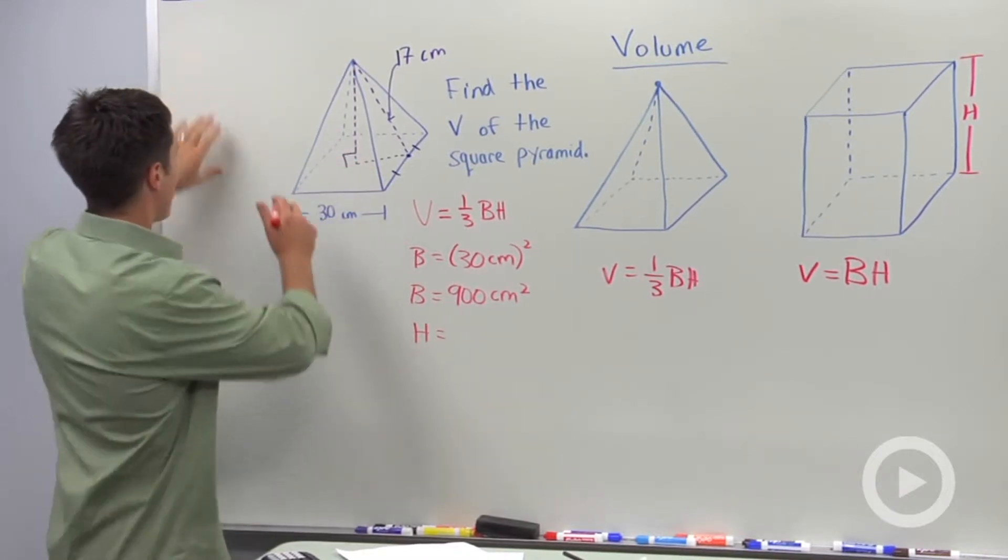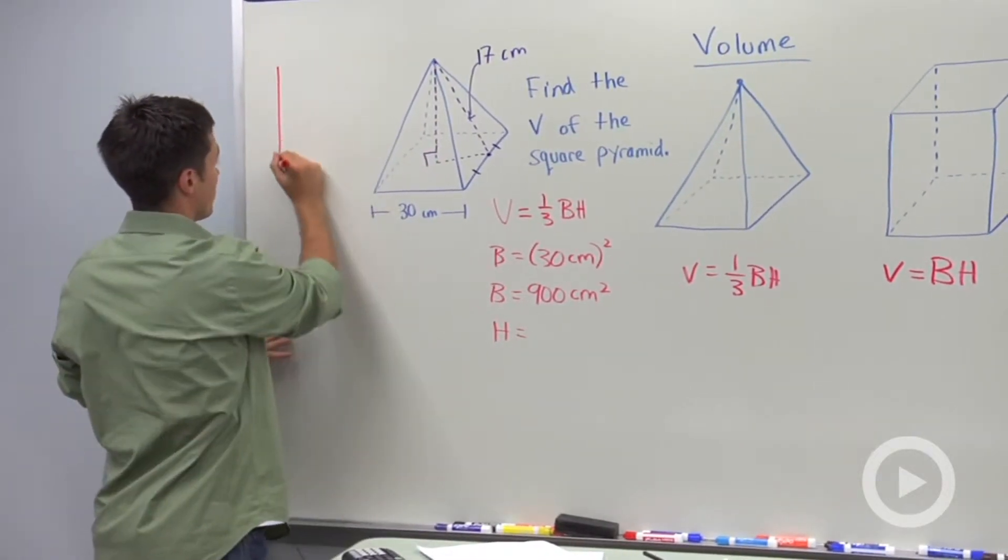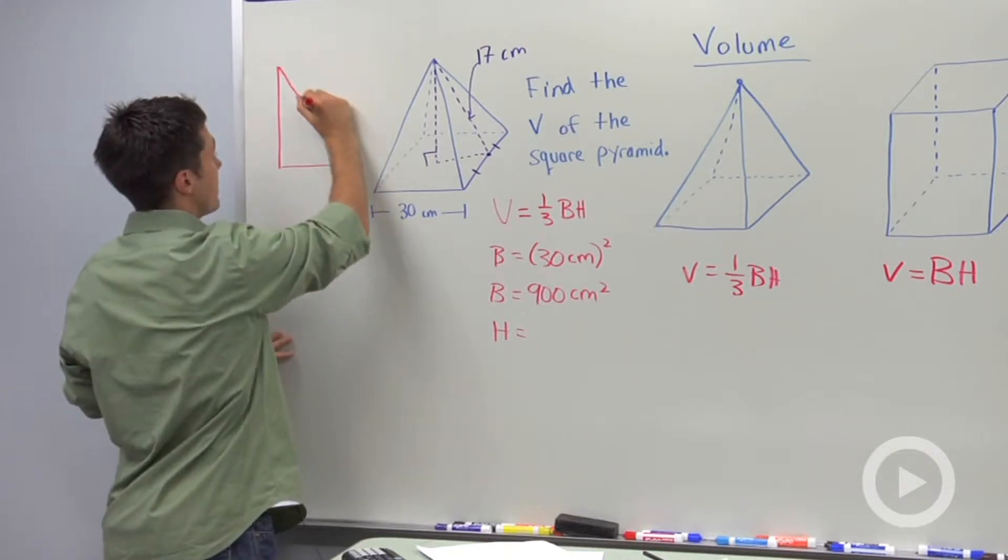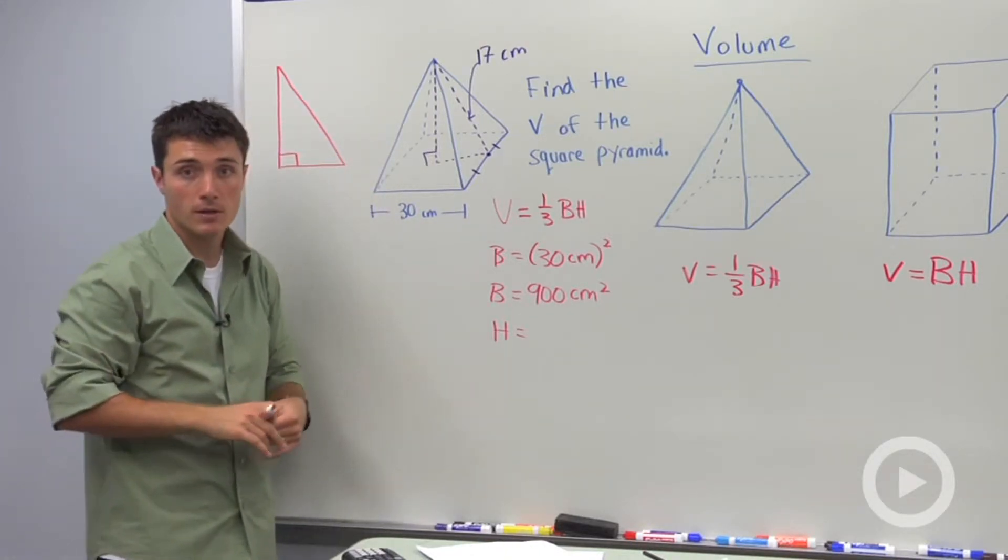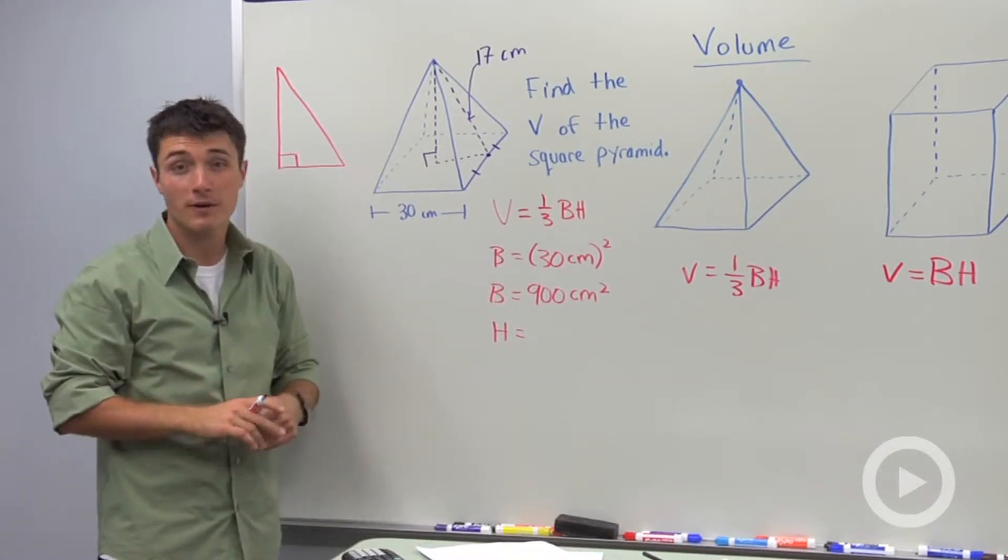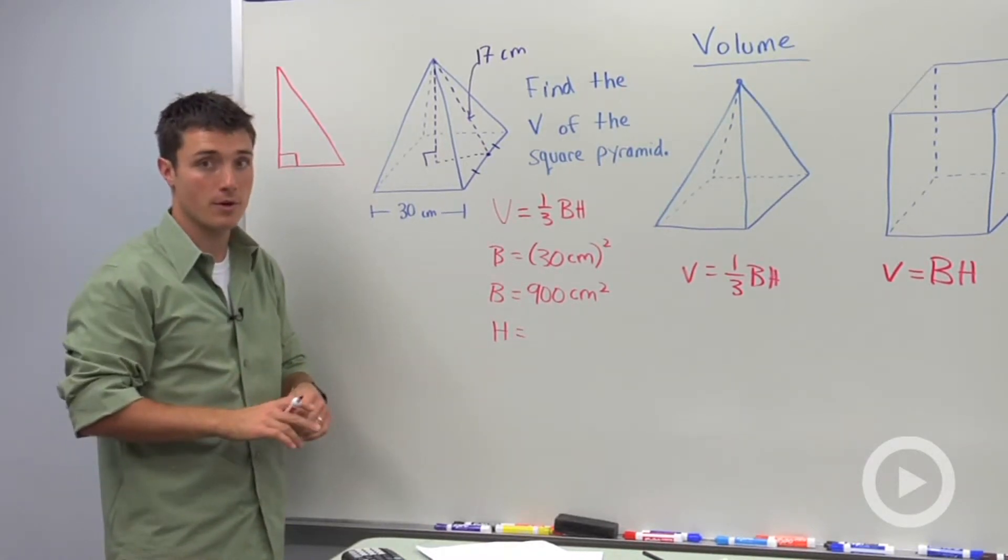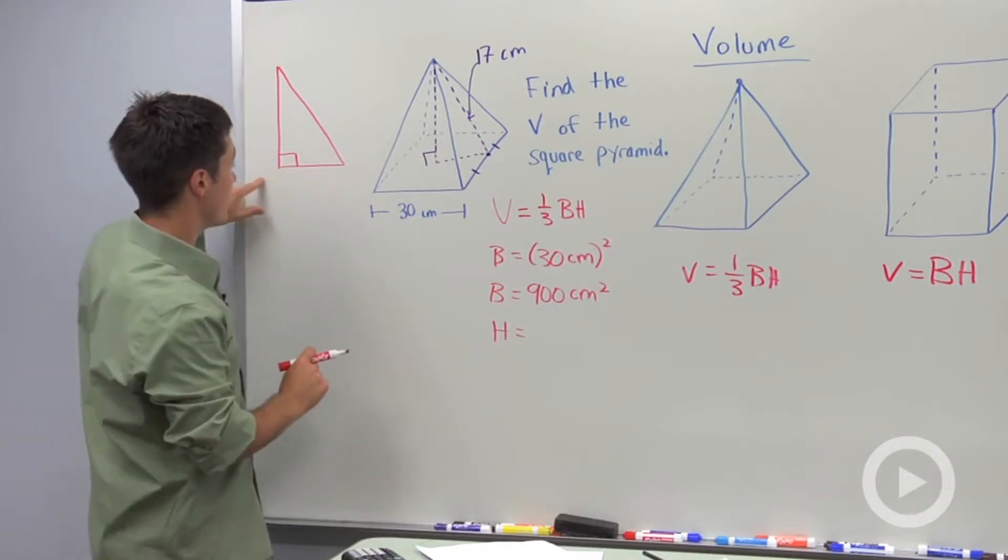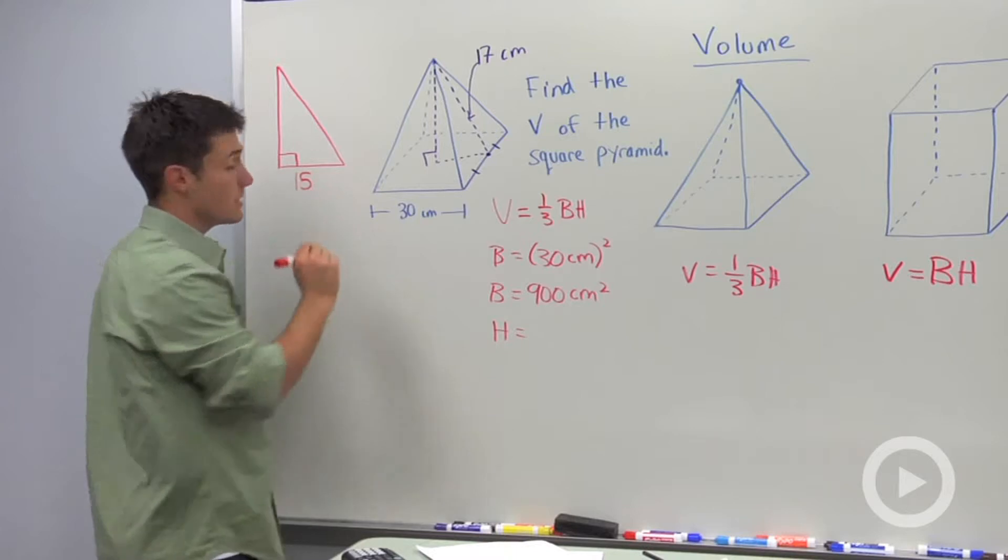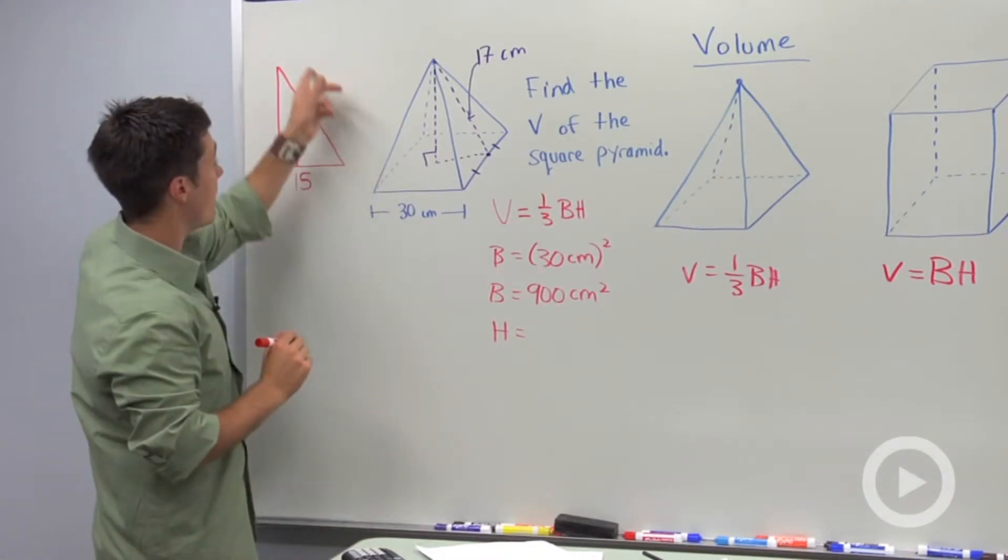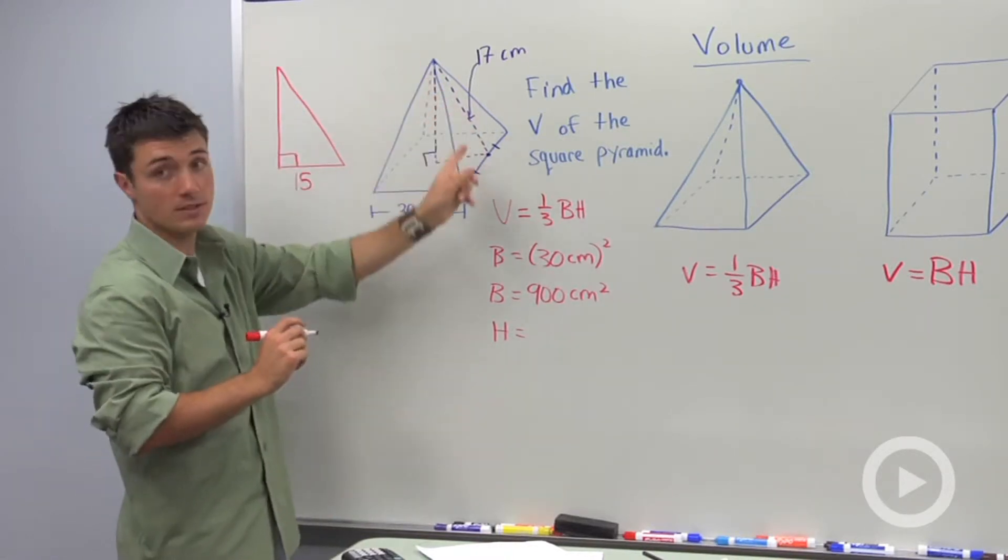So let's draw this triangle right over here that I'm talking about, just to get a better idea of where these numbers come from. In geometry, a lot of times, if you're trying to find a missing length, you're probably going to need the Pythagorean theorem. So here we said that this was half of 30 centimeters, so that's going to be 15, and we said that our hypotenuse here was this 17 centimeters.